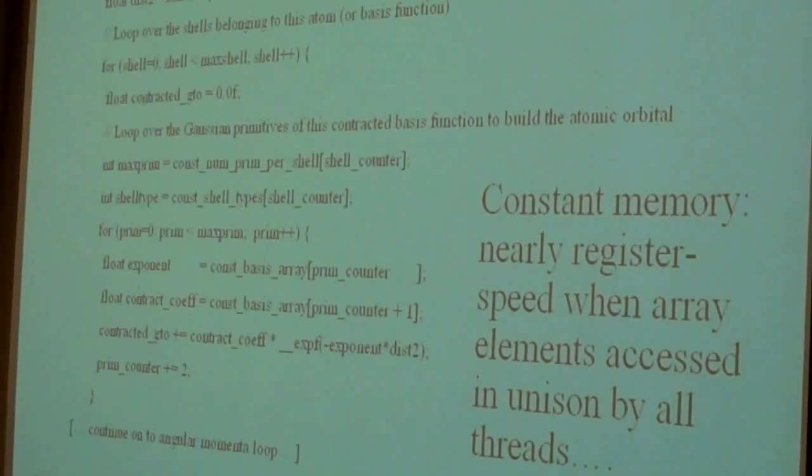So rather than doing this calculation and zipping through those arrays at the speed of global memory, which at best is about 150 gigabytes a second, we're closer to a terabyte a second or more because we're coming out of this near-register speed cache.